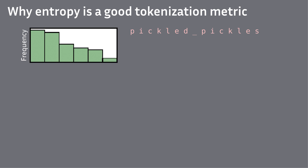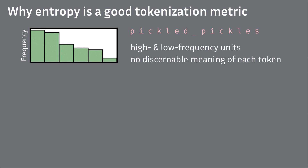Let's build some intuition around why entropy would be a good predictor of tokenization quality. Here we have a tokenization and its unigram distribution. Each bar is a separate unit and the height corresponds to how often it appears in the data. In the first case, the tokenization just tokenizes into sequences of letters, making the sequences super long.